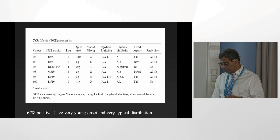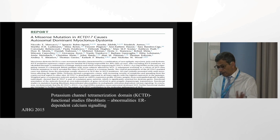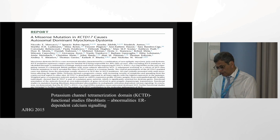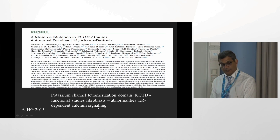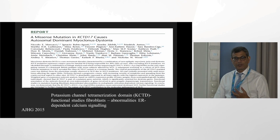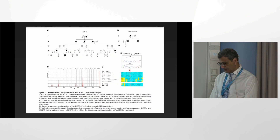The distribution of the myoclonus particularly affects the neck and the upper limbs. As a child they don't drink alcohol, but later when they grow up they find that a little bit of alcohol helps them. They also have a very strong family history — this is a highly penetrant autosomal dominant condition, meaning you need one bad gene, with a 50% chance of inheriting it passing down vertically.